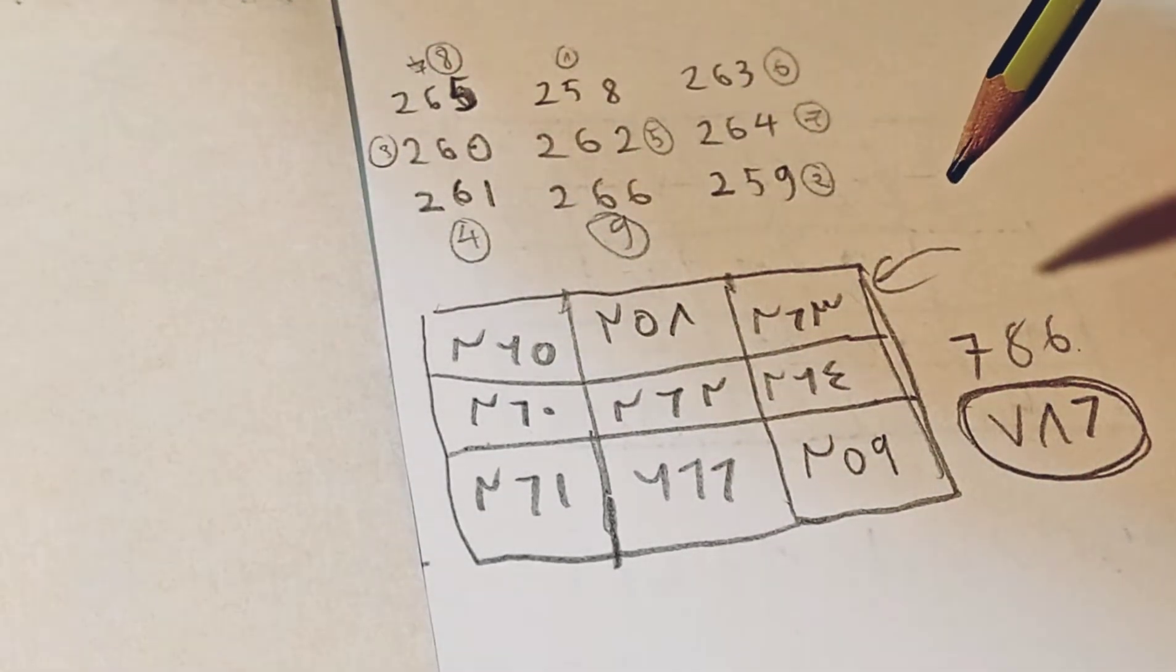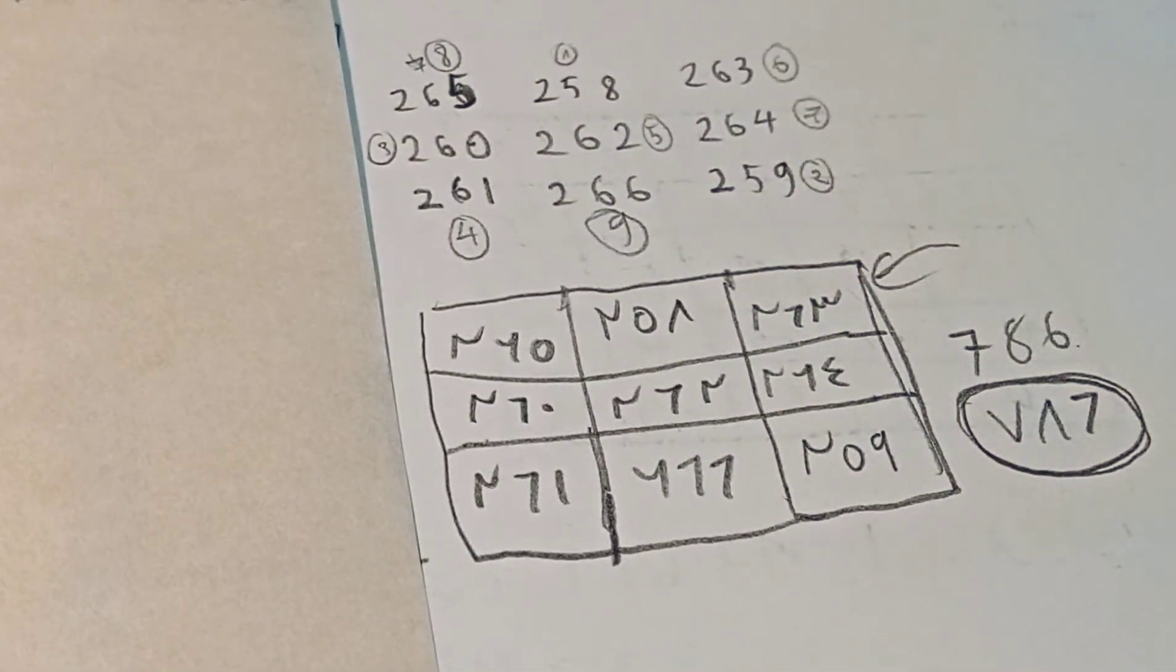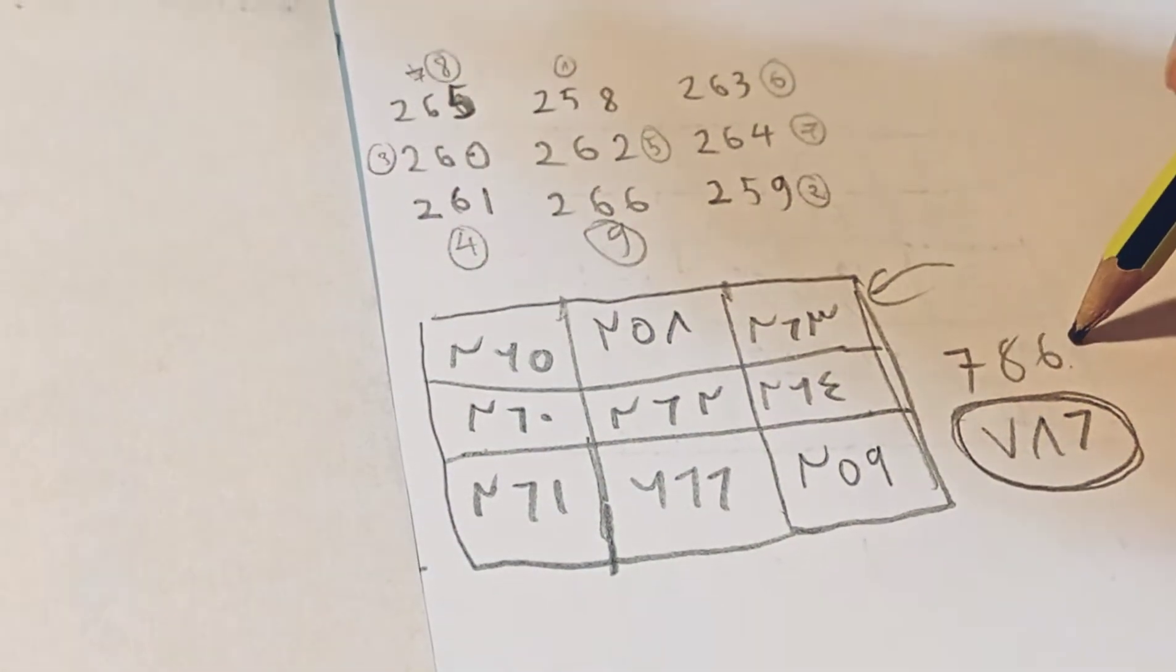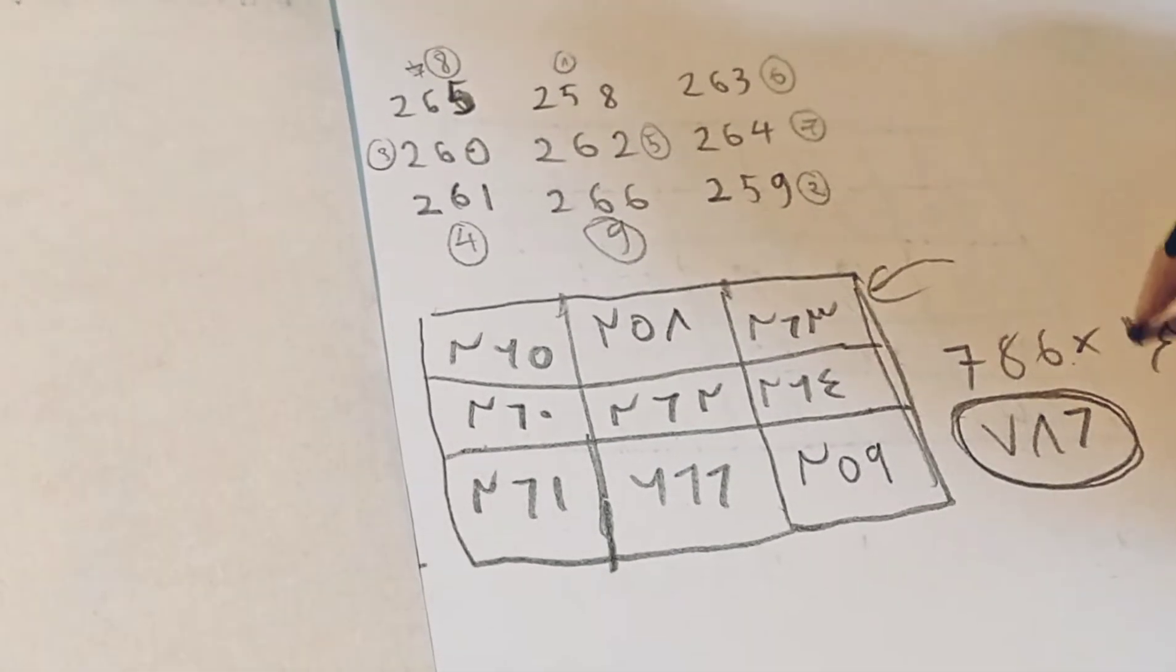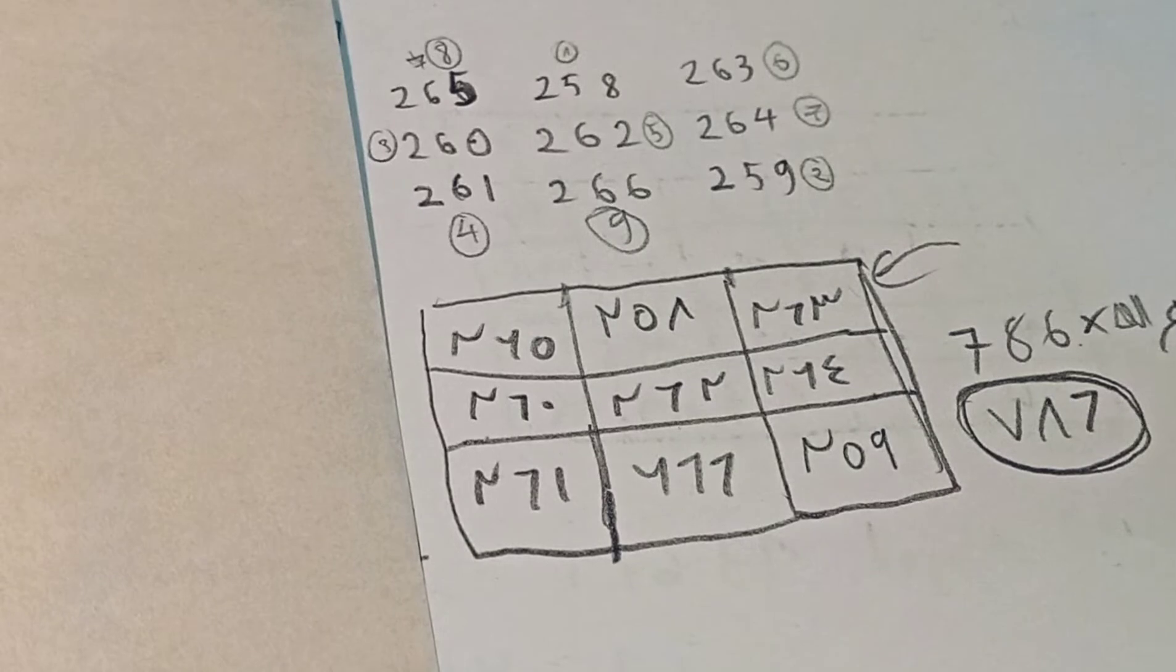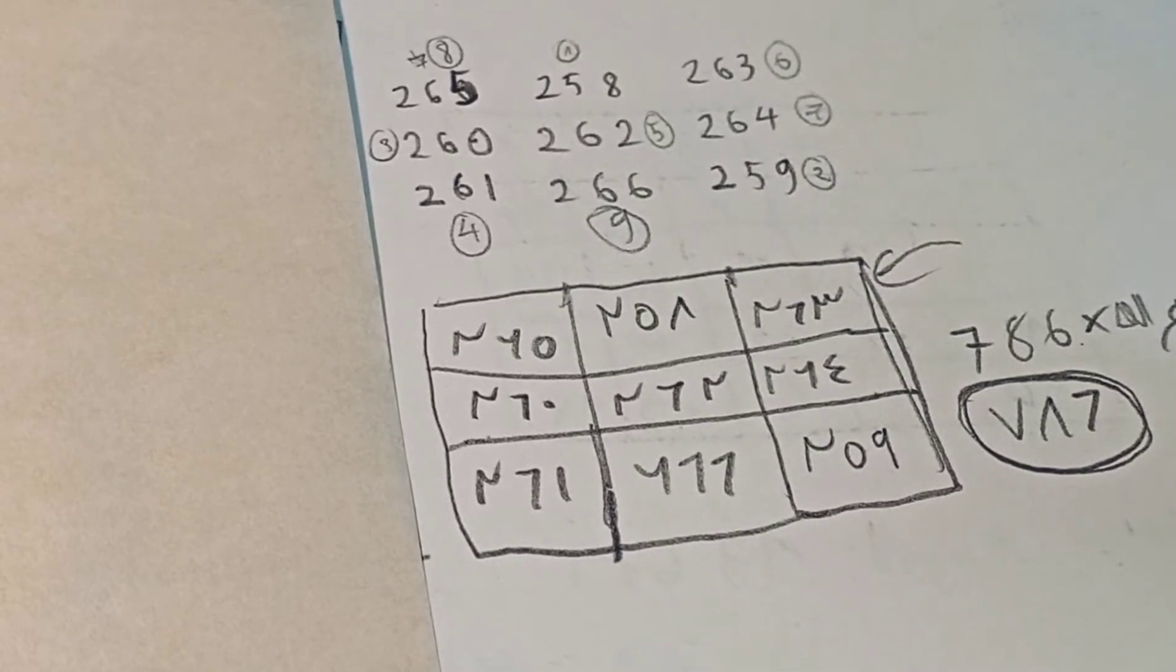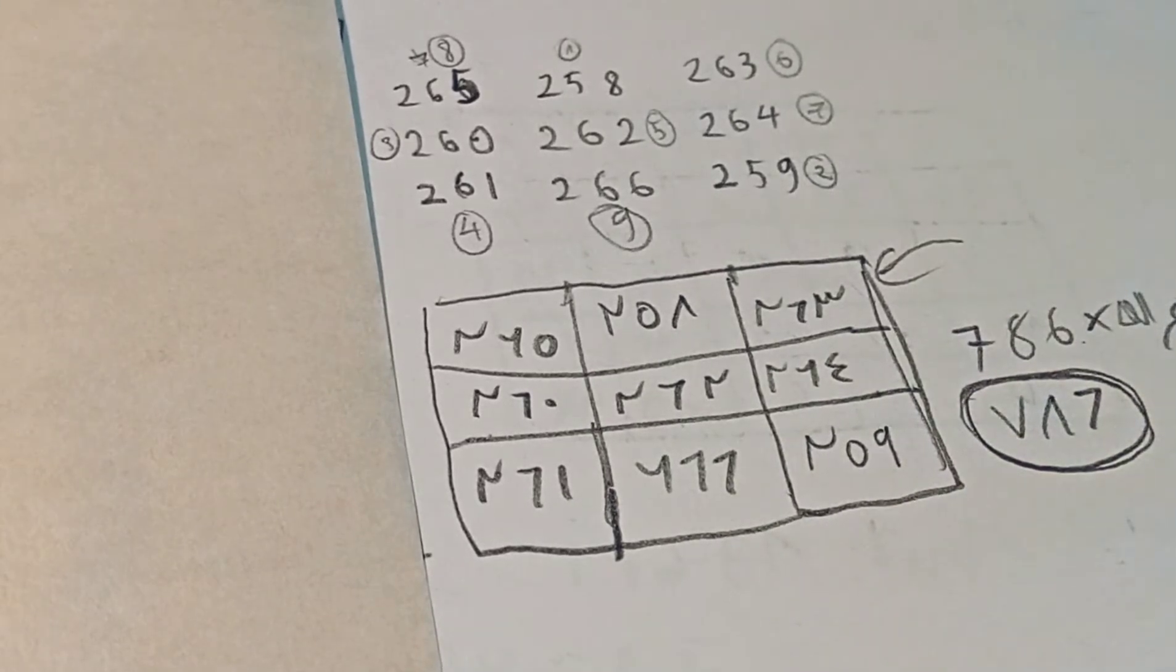Then the first number you write here in the circles I made. This is the first. Then you write this one, then you write the second one which is this one, then you write the third one, fourth, fifth, sixth, seventh, eighth, and ninth, and it's finished and you're done basically.